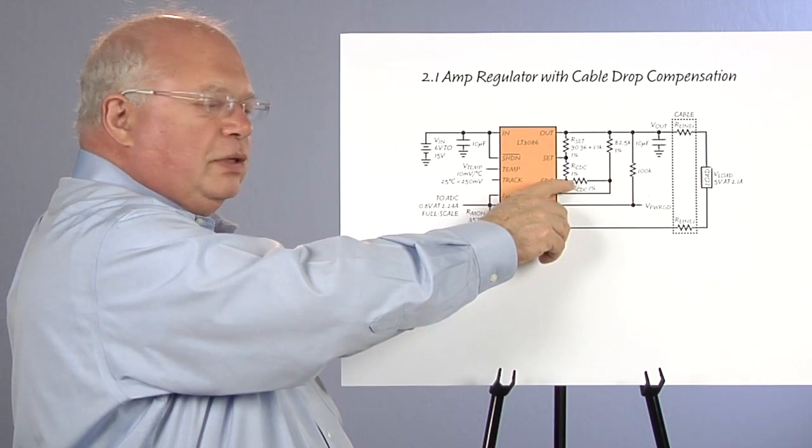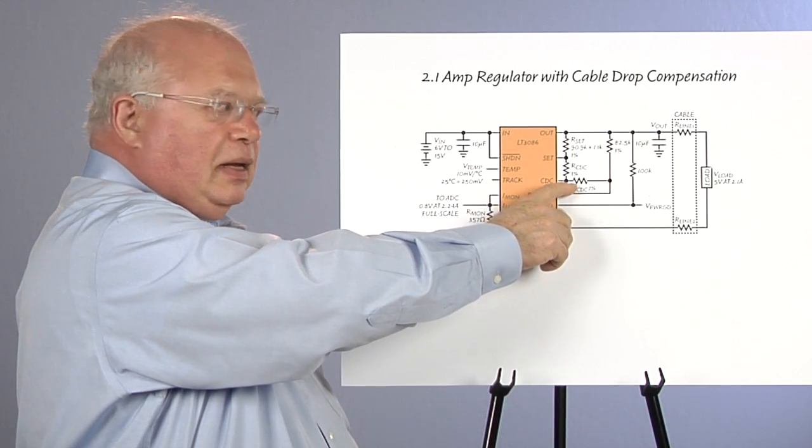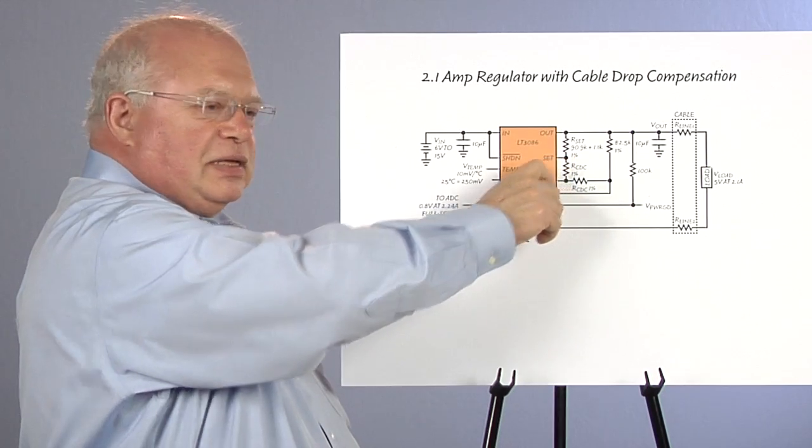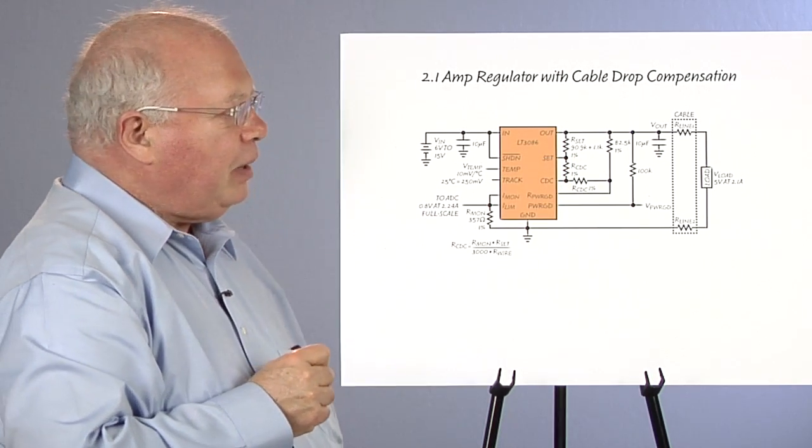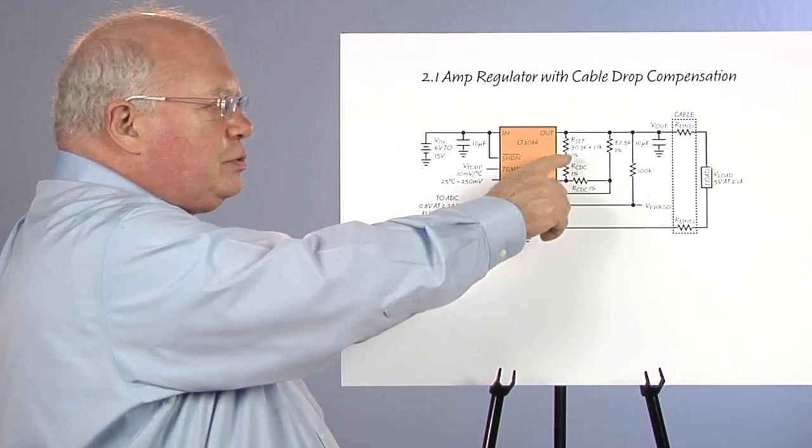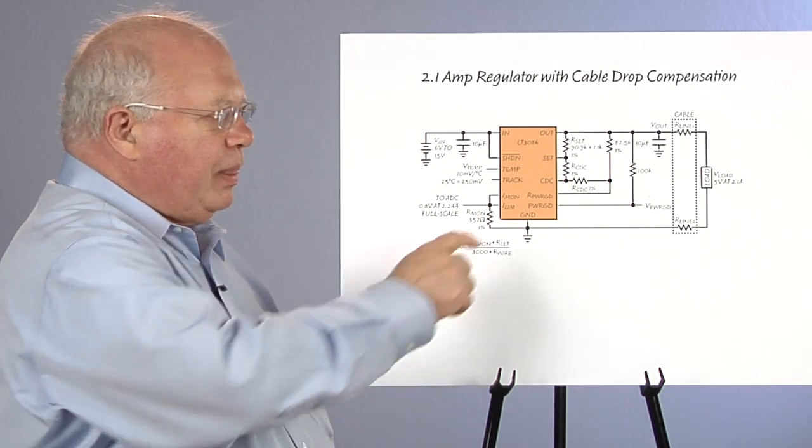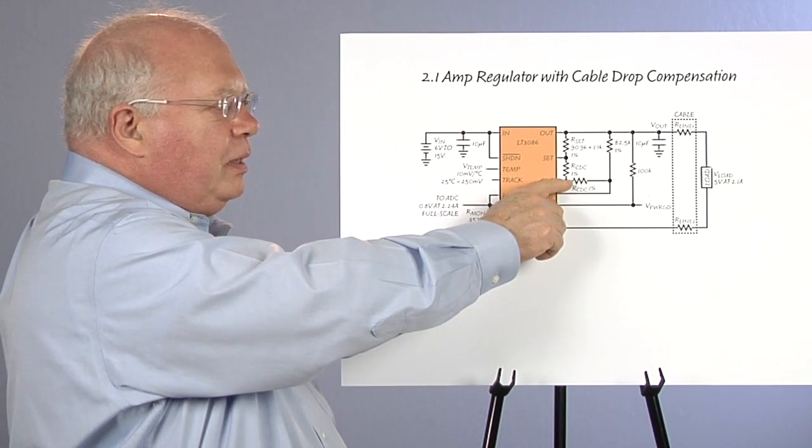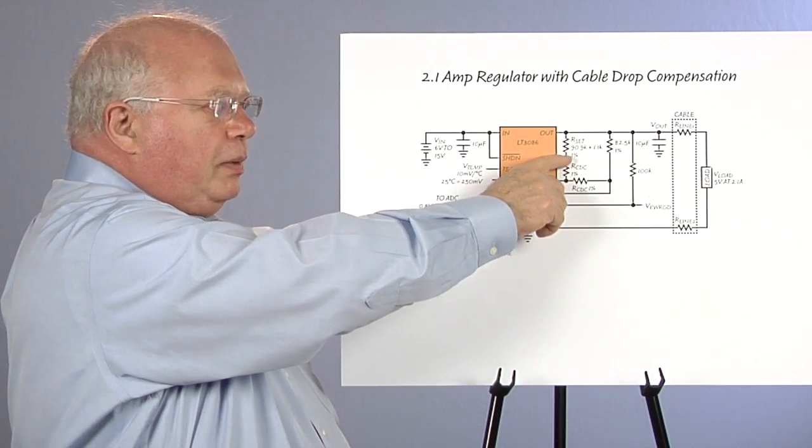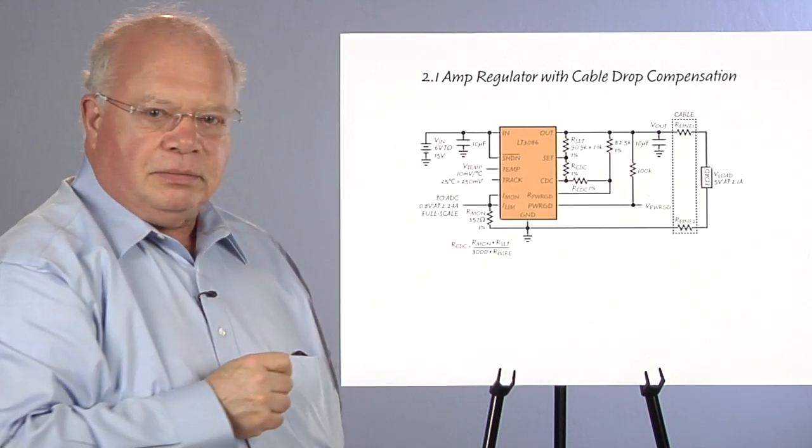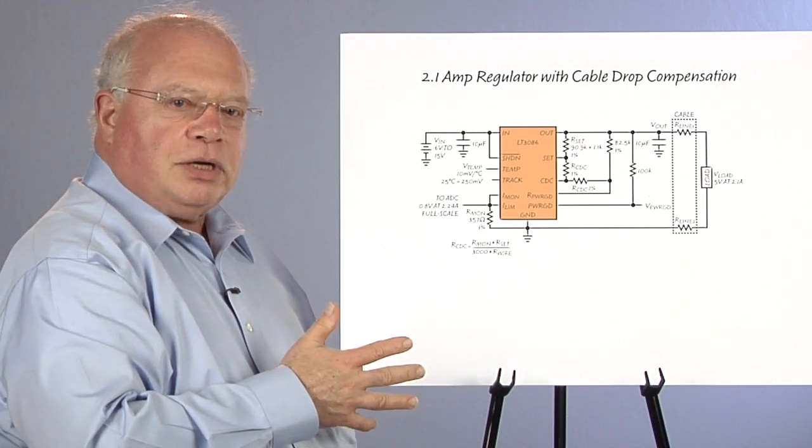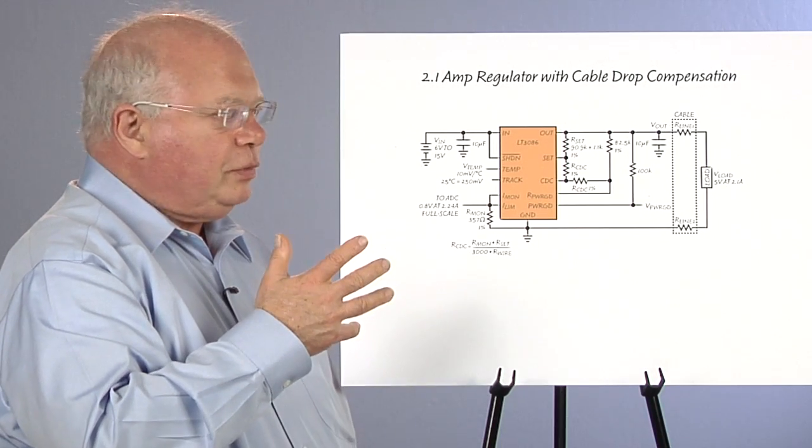With no load, the voltage at the CDC pin is 400 millivolts, the same as the voltage at the bottom of the set resistor. So there's no current through the cable drop resistor. As the load current goes up, this point moves negative, pulling more current through our set resistor. And the increased current through the set resistor makes the output voltage rise.